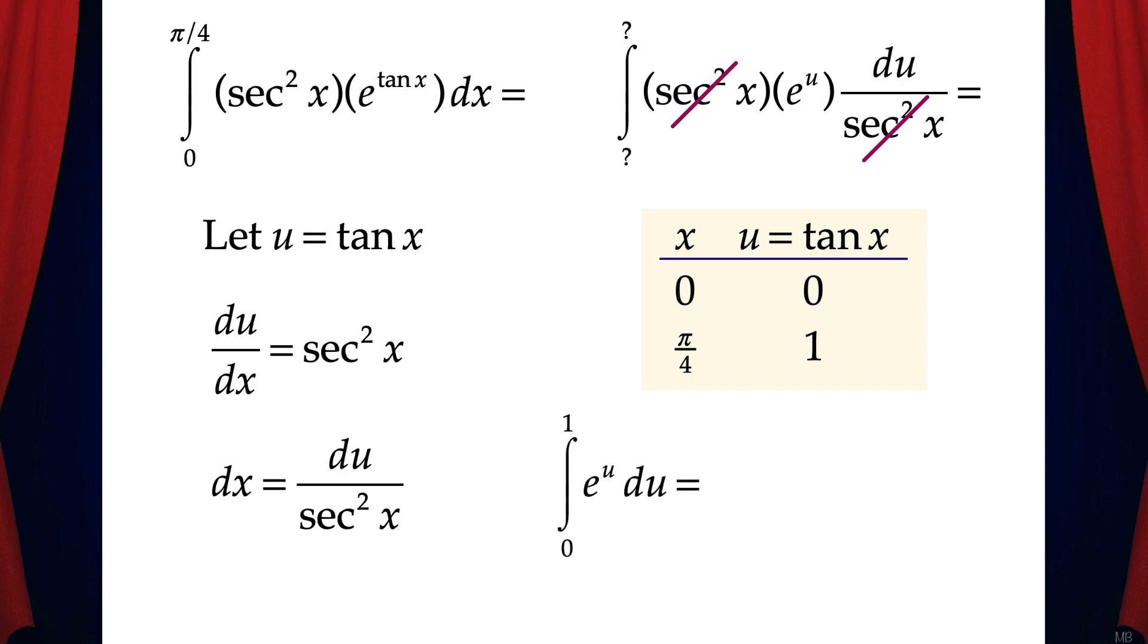So now we have the integral in terms of u only: the integral from 0 to 1 of e to the u du. And the antiderivative is e to the u, which we'll evaluate from 0 to 1. Then we'll apply the fundamental theorem of calculus, and that gives us e to the 1 minus e to the 0, which is e minus 1. And that's the final solution.